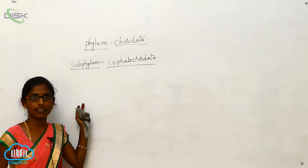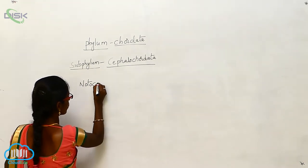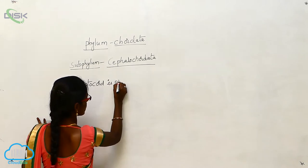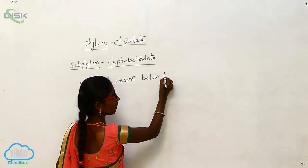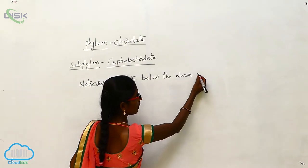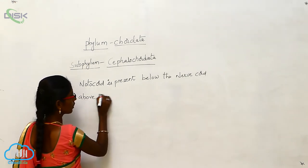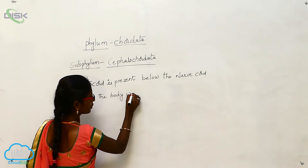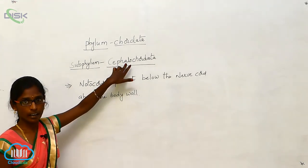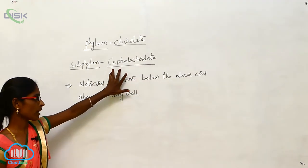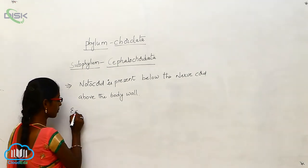In the Subphylum Cephalocardata, the notochord is present below the nerve cord and above the body wall. 'Cephalo' means head, and 'Cordata' refers to vertebrates. So in Cephalocardata, the notochord is positioned below the nerve cord and above the body wall.